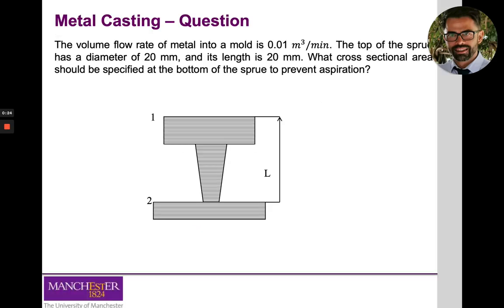So the question was: the volume flow rate of metal into a mould is 0.01 cubic metres per minute. The top of the sprue has a diameter of 20 millimetres and its length is also 20 millimetres. What we are trying to find out is the cross-sectional area at the exit of the sprue that will allow the flow of material without aspiration.